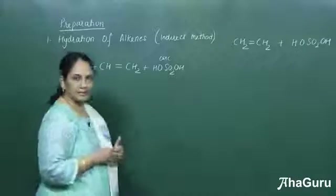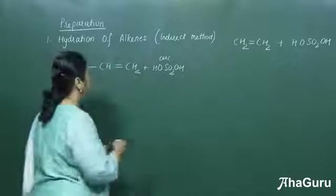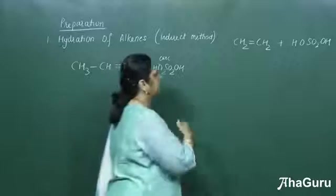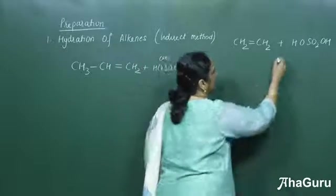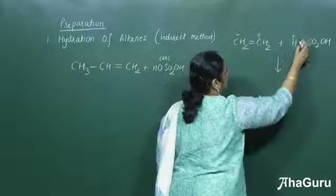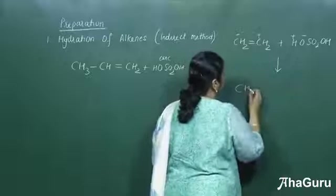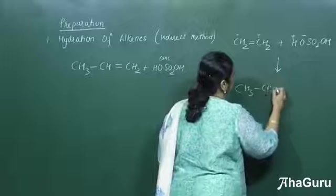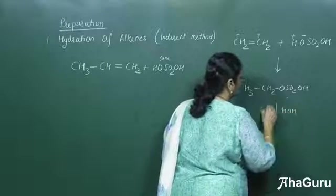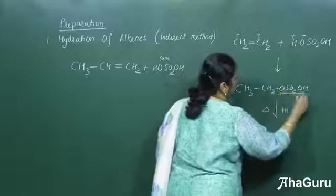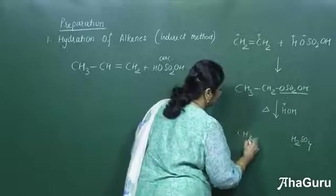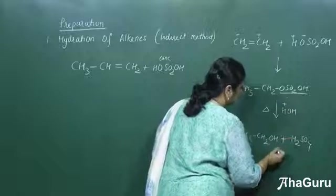We have another method — an indirect method for addition of water across alkenes. Instead of water and H⁺, sulfuric acid is first added to the alkene. Taking ethene and H₂SO₄: since ethene is symmetrical, H gets added to one carbon and OSO₂OH to the other, giving CH₃CH₂OSO₂OH. The next step is addition of water followed by heating, releasing sulfuric acid and giving ethanol — a primary alcohol — as the major product.